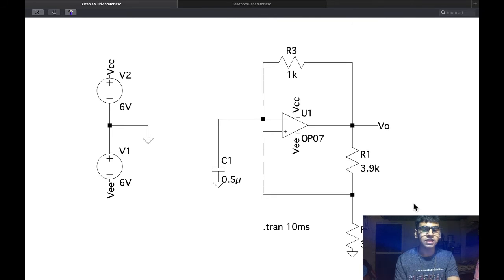Now we have the astable multivibrator circuit. Here we can see that the op-amp does not have any input signal attached to it. It only has a capacitor at its non-inverting terminal and these resistors in feedback. These resistors R1 and R2 are used to decide the time period of oscillation of the output and consequently we can decide the frequency from these resistors.